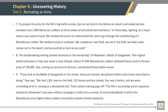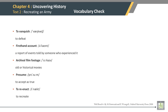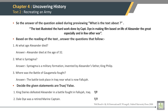First sentence of paragraph 8: This back-breaking training proved necessary in the re-enacting of Alexander's battle of Gaugamela. First sentence of paragraph 9: If you look at the battle of Gaugamela in this movie, these are trained, disciplined soldiers who know what they are doing, Dye says. First sentence of paragraph 10: Stone required his departments to create historically accurate detailing wherever possible. Last sentence of the text: According to the historic consultant, Kilmer's face is made up to look like the skull found in King Philip's tomb would have looked. Vocabulary: To vanquish — to defeat. First-hand account — a report of events told by someone who experienced it. Archival film footage — old or historical movies. Presume — to accept as true. To re-enact — to recreate.